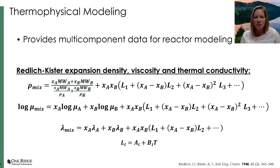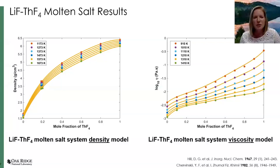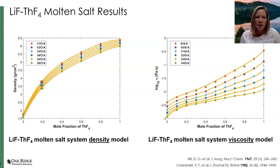So how do we model from literature and experimental data? Using the pure and binary components and modeling binaries based on the pure components, you take pure components and binary models to mix and match and make multi-component extrapolations. We use the Redlich-Kister expansion, and here you can see the equations for density, viscosity, and thermal conductivity that we use in our database. Reviewing the lithium fluoride, thorium fluoride pseudobinary, you can see the density and viscosity data shown in these two plots. These plots are generated by applying the Redlich-Kister expansion and then curve-fitting the literature data, and visually it's a pretty good fit.